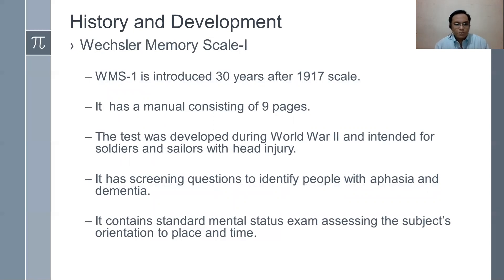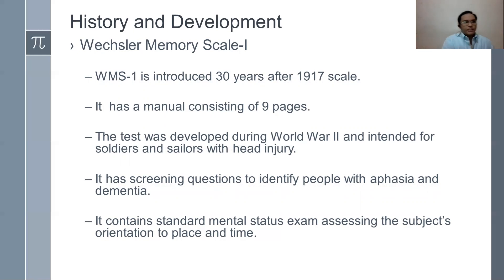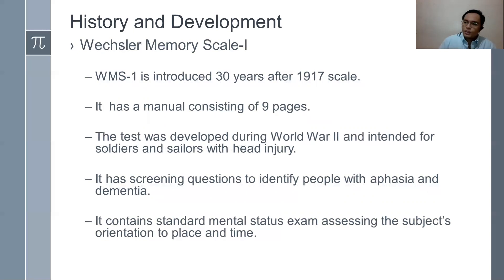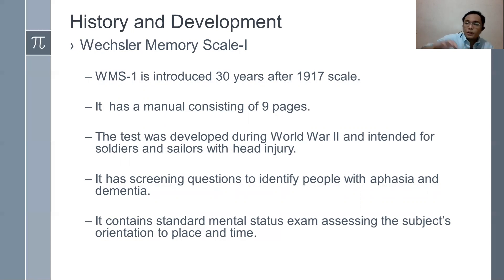The WMS 1 has a manual consisting of 9 pages. The test was produced during World War II and intended for soldiers and sailors with head injury. Compared to the 1917 scale, screening questions were added — used to filter whether the issue is truly from head injury or from prior medical conditions.